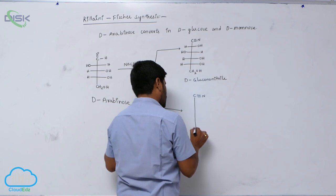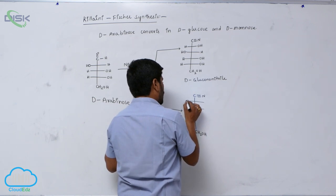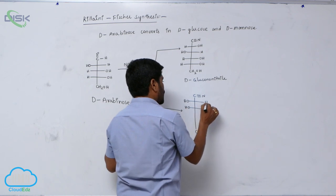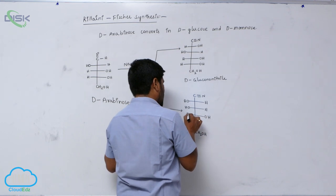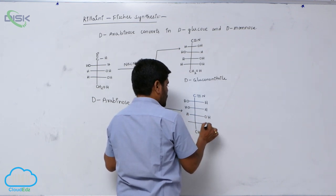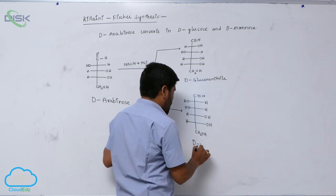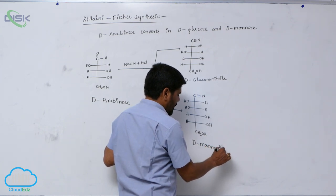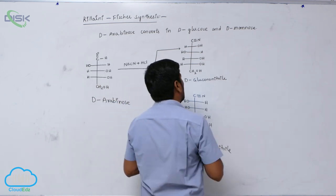C triple bond N. Hydrogen, two OH are left. Hydrogen here is also hydrogen. OH hydrogen. Then here is also OH hydrogen. This is known as D-manonitrile.